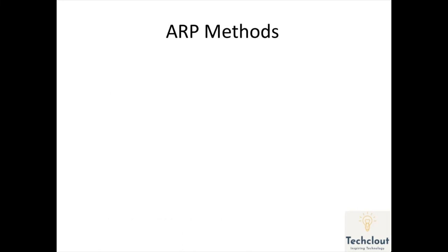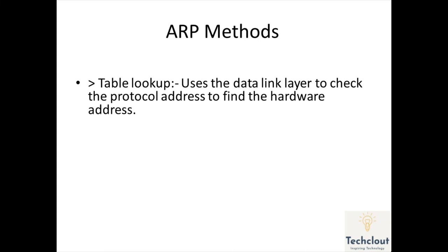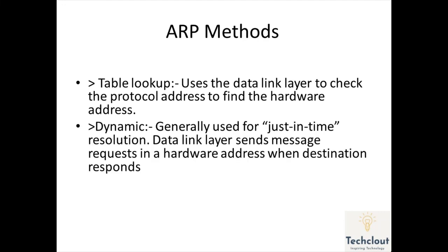Now let's discuss ARP methods. The first method is table lookup, where the data link layer checks the protocol address (IP address) to find the hardware address (MAC address). The second method is ARP dynamics, or dynamic ARP, which is used for just-in-time resolution where the data link layer sends a message request for a hardware address when the destination responds.